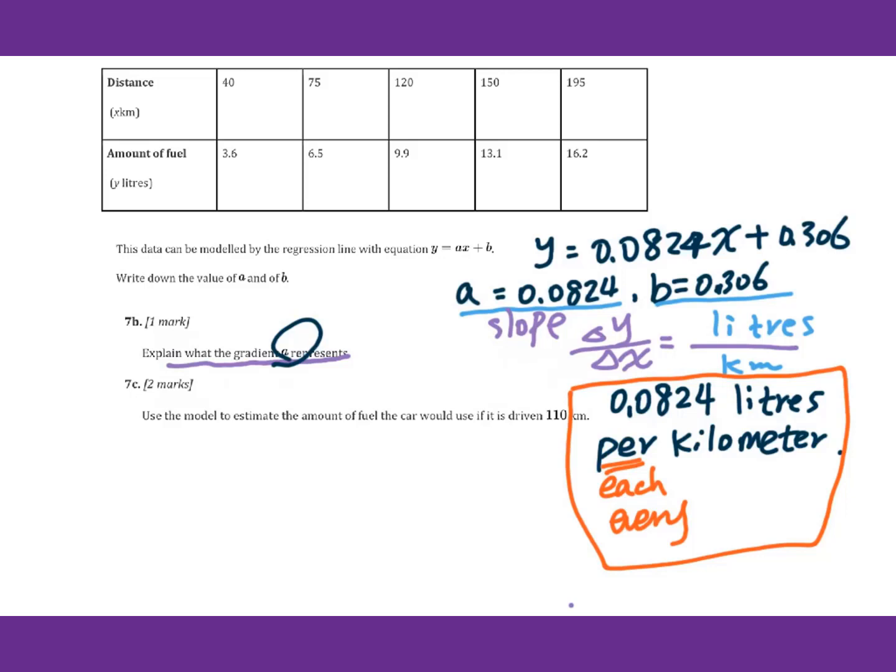Then for 7c, we estimate the amount of fuel the car would use if it's driven 110 kilometers. Basically, we just need to plug in 0.0824 times 110, then it's plus 0.306. Your answer will be 9.37 liters.